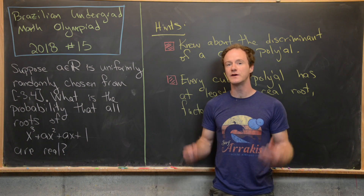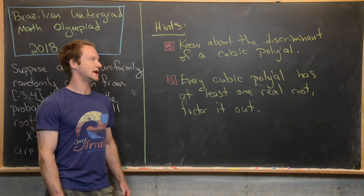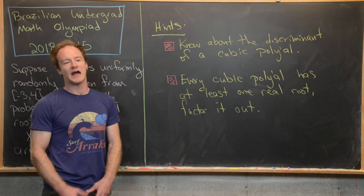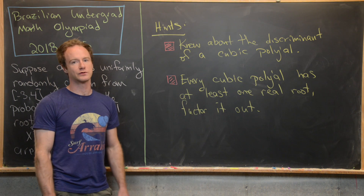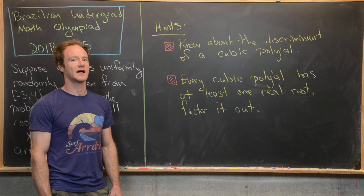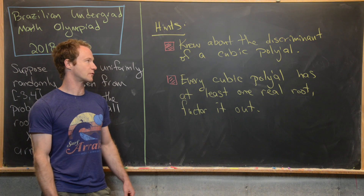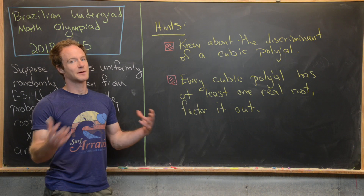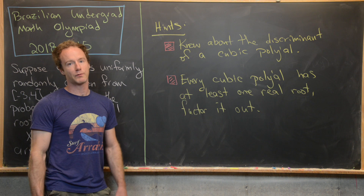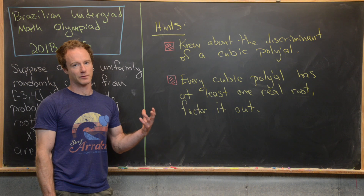I'll give two hints for two different solutions. The first hint is to know about the discriminant of a cubic polynomial. There's a discriminant for quadratic polynomials that easily determines the number of real roots — well, there's an analogous discriminant for cubic polynomials built off the cubic formula, and we can use that to find the number of real roots of a cubic. This is by no means the easiest way, but a well-prepared math competitor might have this at the tip of their brain.